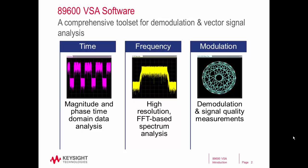The VSA software starts out by acquiring a signal's magnitude and phase information in the time domain, which enables you to analyze or view the signal versus time, and then FFTs are performed on the data to provide frequency domain data for spectrum analysis. And then lastly, based on the signal type or format that's being used, the software is able to demodulate the signal and provide modulation quality metrics like EVM, for example.